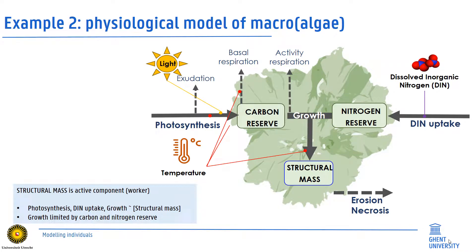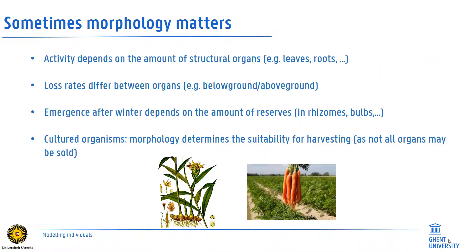In plants, structural mass depends also on the uptake of other elements besides carbon, such as nitrogen, phosphate, and potassium, with growth eventually limited by one of these. The presented algae growth model is, for instance, based on carbon and nitrogen uptake. Finally, we may need to separate processes in different organs to get a complete individual picture. This is especially so for plants where activity depends on the amount of different structural organs, or for which economic purposes should consider maximization of growth of certain organs only — roots, leaves, flowers, or fruits.